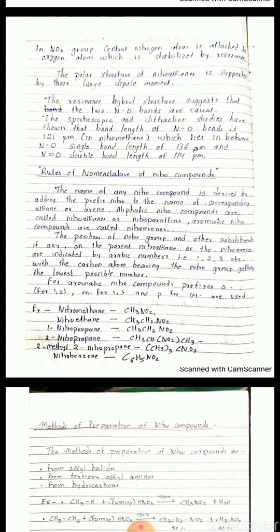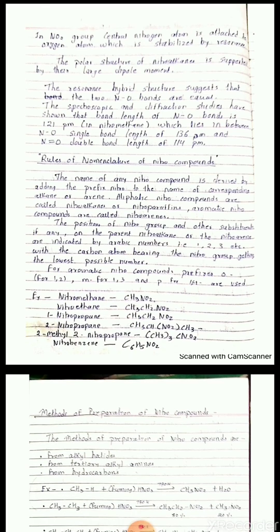Now the rules for nomenclature of nitro compounds: the name is derived by adding the prefix 'nitro' to the name of the corresponding alkane or arene. Aliphatic nitro compounds are called nitroalkanes or nitro paraffins. Aromatic nitro compounds are called nitroarenes. The position of the nitro group and other substituents, if any, on the parent nitroalkane or nitroarene are indicated by Arabic numbers 1, 2, 3 etc., with the carbon atom bearing the nitro group getting the lowest possible number. For aromatic nitro compounds, prefixes O (ortho, 1,2), M (meta, 1,3), and P (para, 1,4) are used.